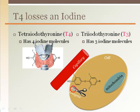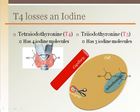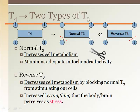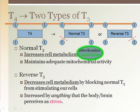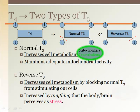Under normal conditions, the iodine that the enzyme removes makes T3 that increases metabolism — normal T3 is formed when an enzyme cleaves off an iodine from T4, which normally increases metabolism. However, it has been found that under stressful conditions, a different iodine molecule is removed, which makes reverse T3, which decreases metabolism.